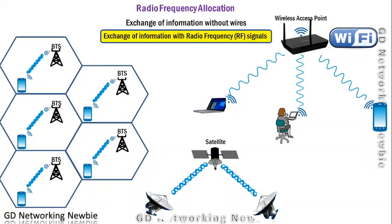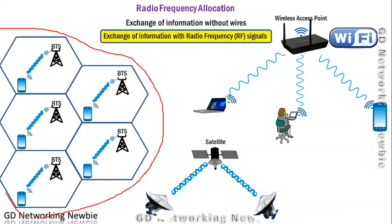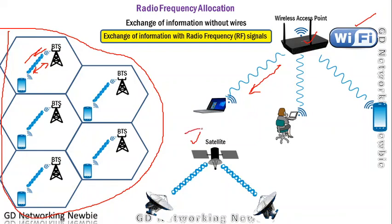Today we are going to discuss radio frequency allocation. Radio frequency signals are useful in wireless communication when we are not using wires. For example, in cellular communication, mobile handsets are connected with towers like BTS without wires using wireless medium. In the same way, Wi-Fi uses an access point connected wirelessly, and we also have satellite communications — all possible with radio frequency signals.